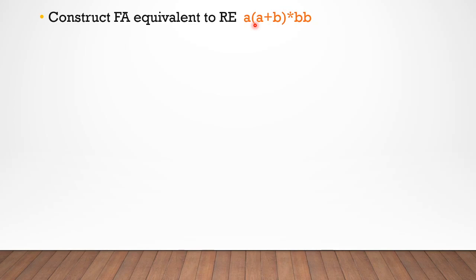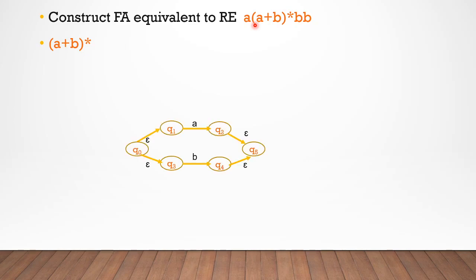Let's see step by step. We start with (a plus b) star. Now if you do a plus b first, then you apply the star. So a plus b gives us the union NFA. Then (a plus b) star uses the Kleene star — that is Thomson's method. We combine the two pieces in series.